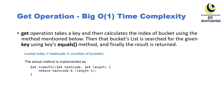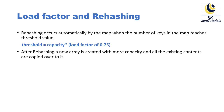Now, when we talk about load factor and rehashing, these are keywords you should be very clear about for interviews. Rehashing occurs automatically by the map when the number of keys reaches a threshold value. The threshold is calculated as: initial capacity (16 by default) multiplied by the load factor (0.75 by default), which gives 12. So once you add 12 elements and then try to add a 13th element, you go beyond the threshold and rehashing starts.